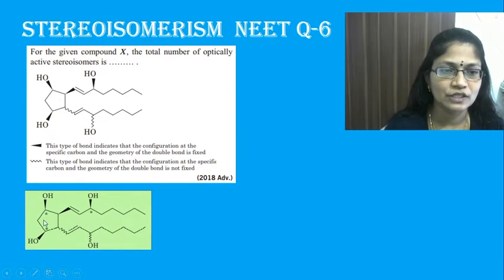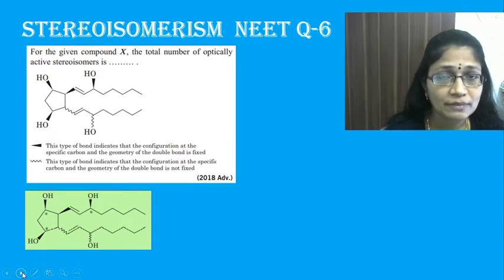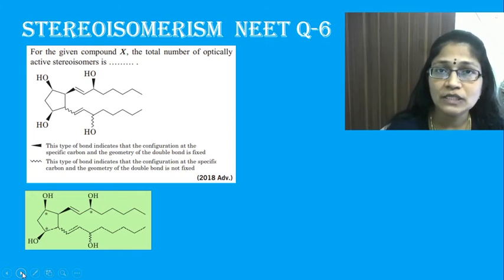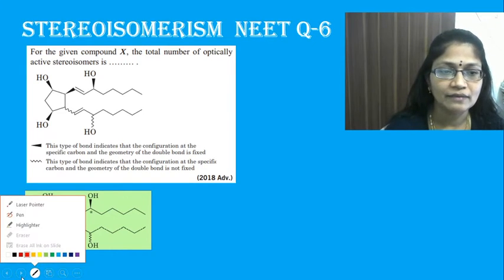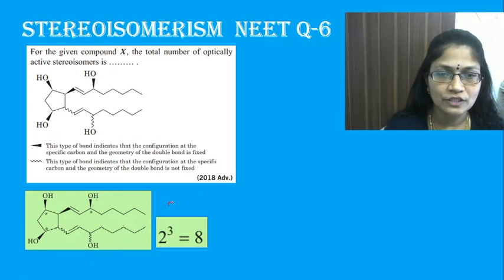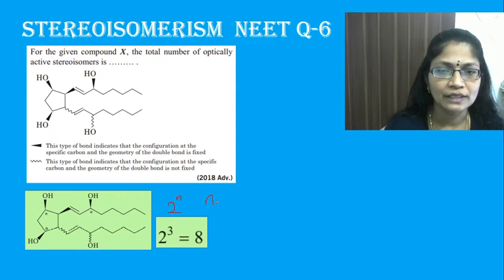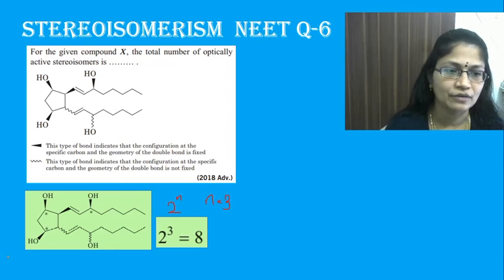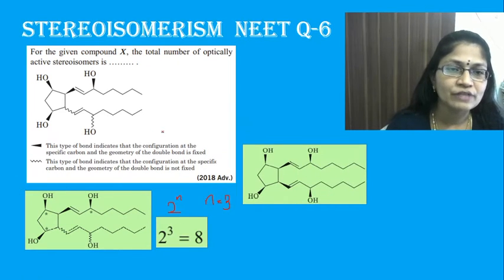The star symbol shows that there are three asymmetric carbon atoms. If three asymmetric carbon atoms are present, the number of stereoisomers possible is given by the formula 2^n, where n is the number of asymmetric carbon atoms. Here n = 3, so 2^3 = 8 stereoisomers.